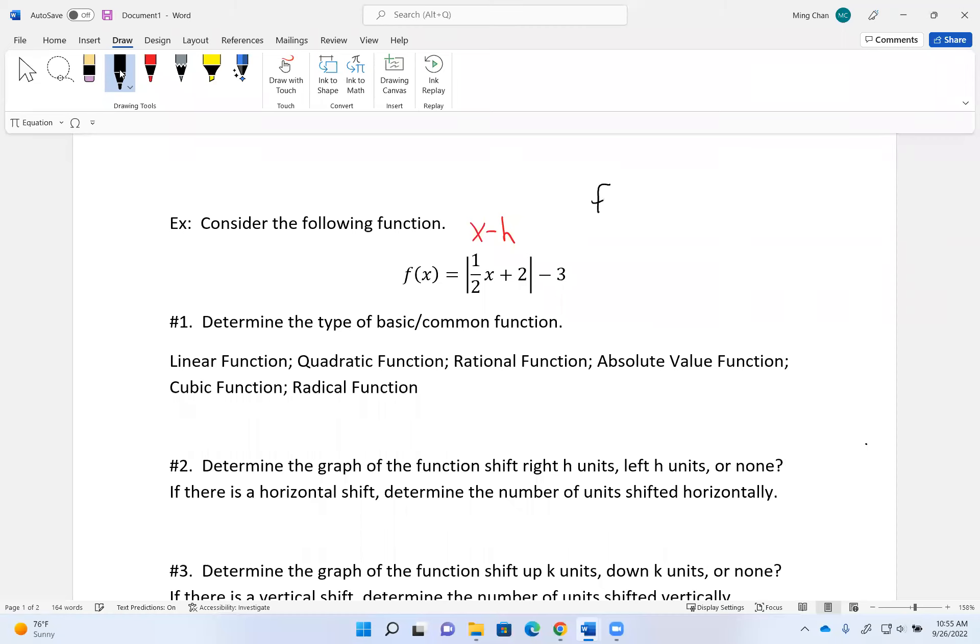So what I can do inside my absolute value is to factor out the half between these two terms. The half I factor out should still be inside the absolute value.